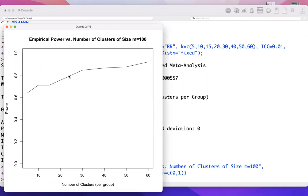So, here we could see again that roughly, from this example, with roughly 25 clusters per intervention group, we would have approximately 80% power.